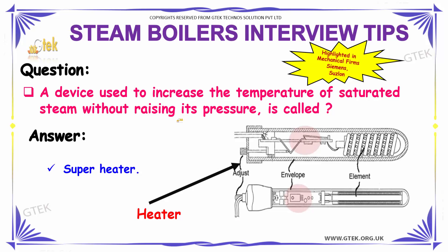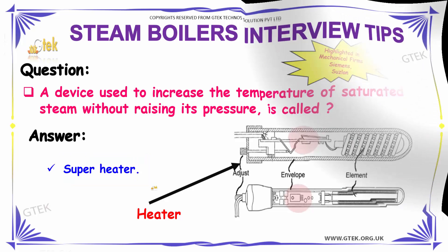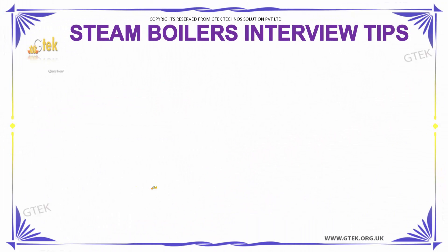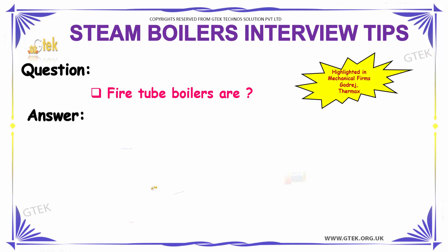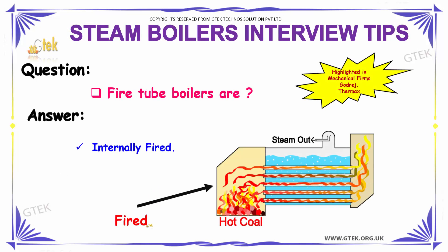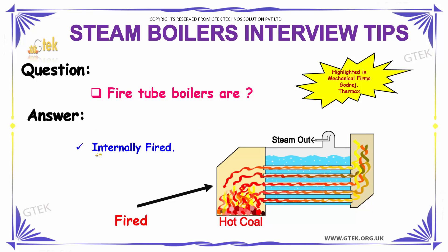A device used to increase the temperature of saturated steam without raising its pressure is called a super heater. Fire tube boilers are internally fired.